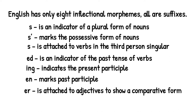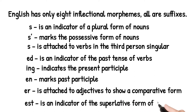By adding '-er' at the end of a word — for example, 'clever' — and '-est', which is used as the superlative form of adjectives, we make 'cleverer' and 'cleverest'. The grammatical function is changing from the inflectional morpheme. We call this the inflectional morpheme. These are the eight inflectional morphemes which are used in English.